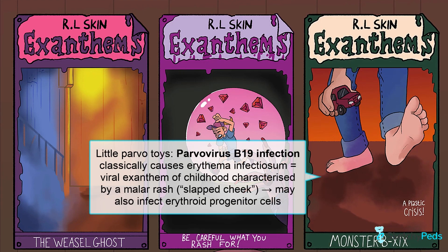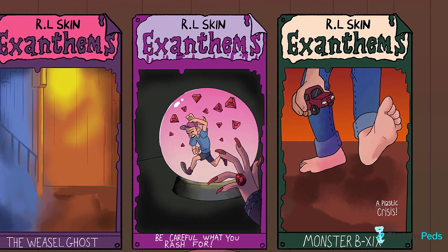The third condition we will discuss in the sketch is parvovirus B19 infection, and it goes by erythema infectiosum, fifth disease, or simply parvo. All things parvo will take place in and around our poster for the Exanthems book titled Monster B19. Parvo comes from the Latin parvus for small, so we're dealing with tiny toy monsters here. Parvovirus B19 is unique in that it infects erythrocyte progenitor cells, which can cause a few unique complications. More on that later.